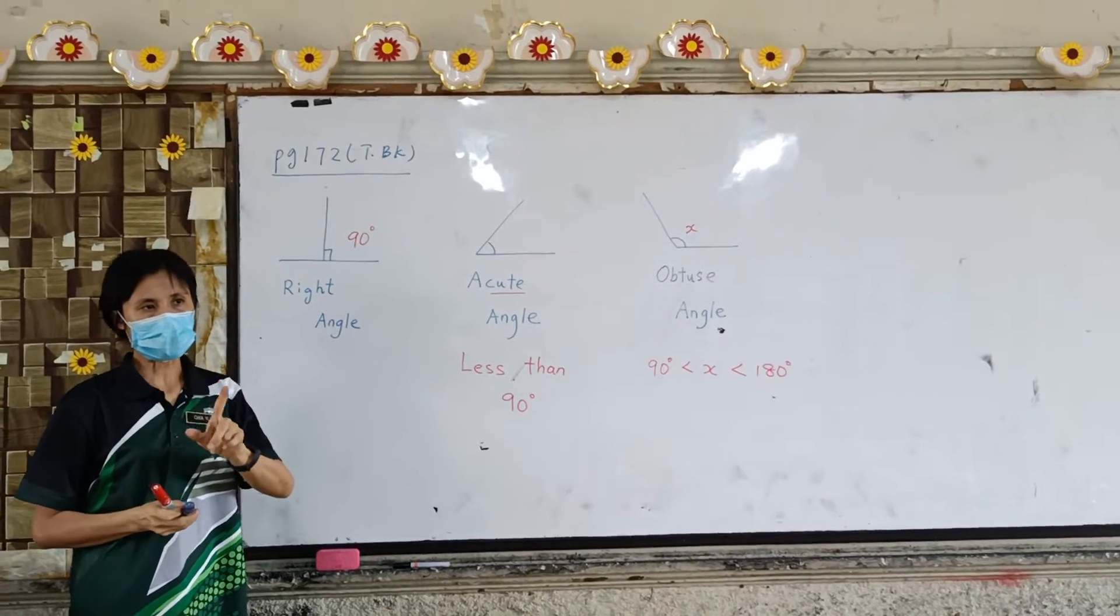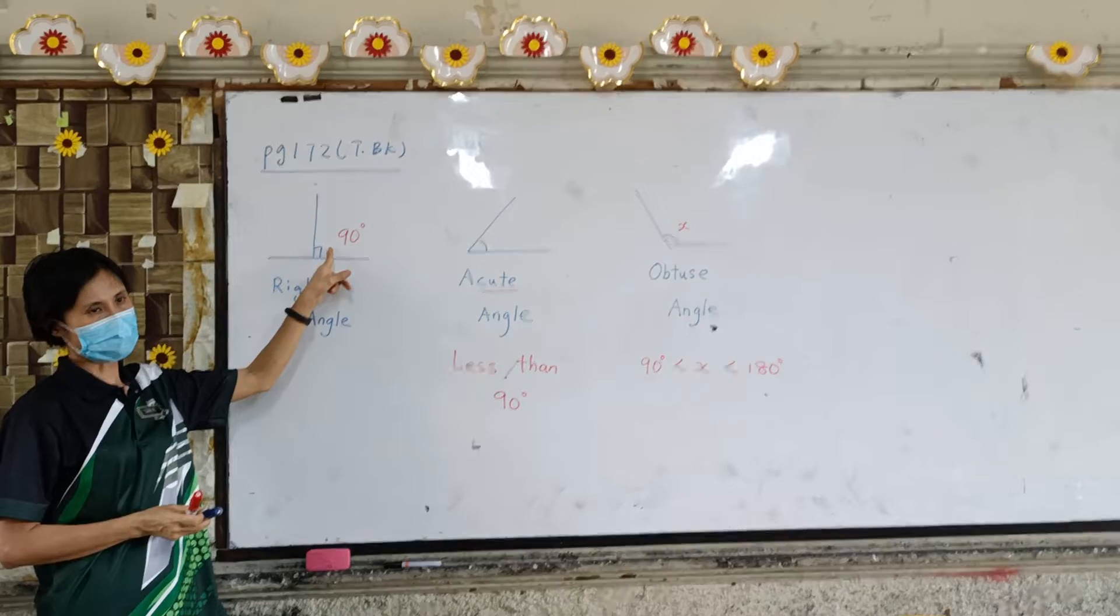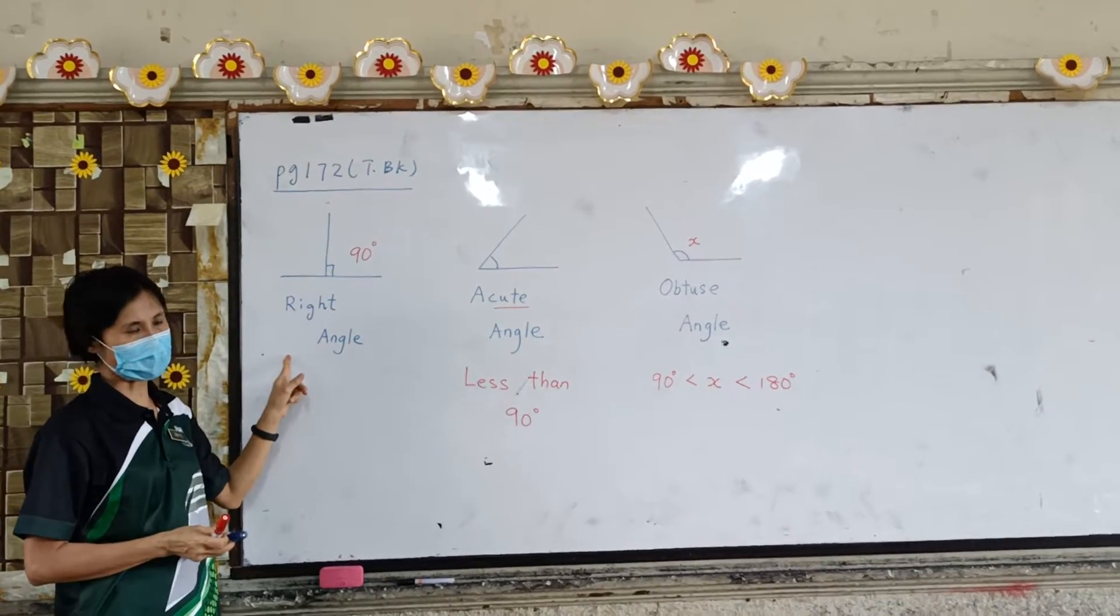A symbol is a measure. When you see like this, it is 90 degrees. 90 degrees is a right angle.